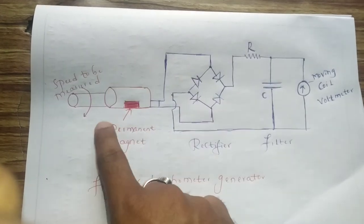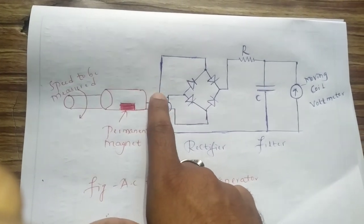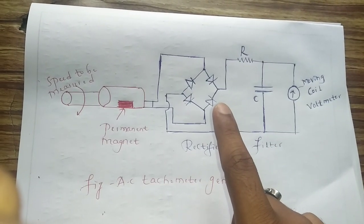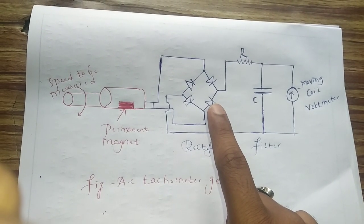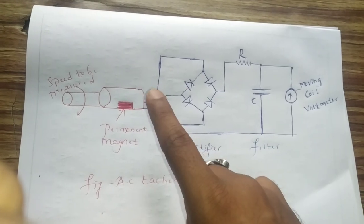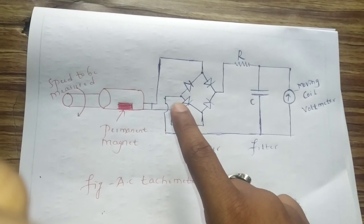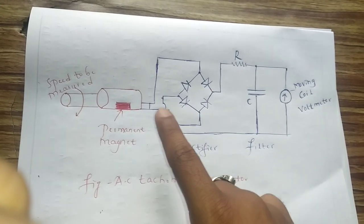The rotation of the magnet causes the EMF to be induced in the stator coil. The amplitude and the frequency of this EMF is proportional to the speed of the rotation. Thus either amplitude or frequency of the induced voltage can be used as a measure of rotation speed.